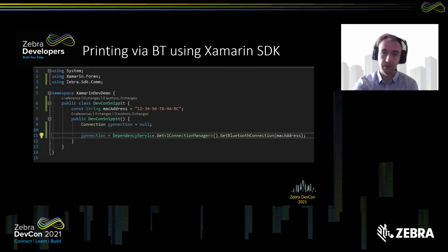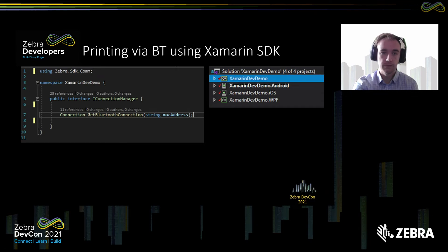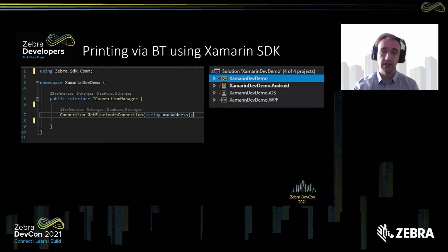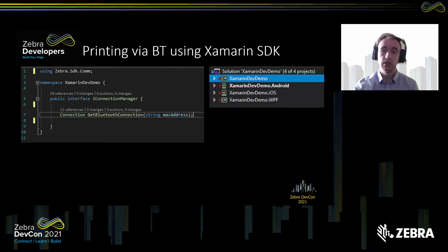You can see another example in our tech docs as well. Once we get that set up, this is a snippet of how our iConnection manager looks — it includes all your connection methods. In our case, I only have one get Bluetooth connection method for demo purposes. iConnection manager lives in your main project. You can see on the right-hand side we have four projects: Xamarin dev demo (the main project), and dev demo for Android, iOS, and Windows platform.